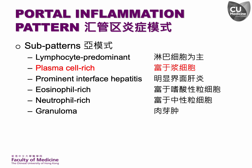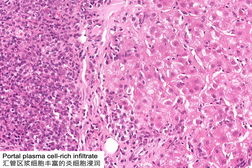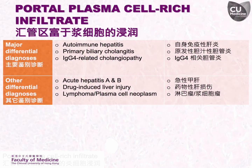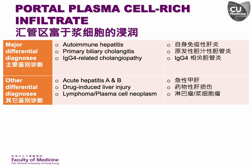The next sub-pattern is plasma cell-rich portal inflammation. This portal tract is significantly expanded by a plasma cell-rich inflammatory infiltrate. Plasma cell-rich portal inflammation is typically associated with immune-mediated liver diseases such as autoimmune hepatitis, primary biliary cholangiitis, and IgG4-related liver disease.